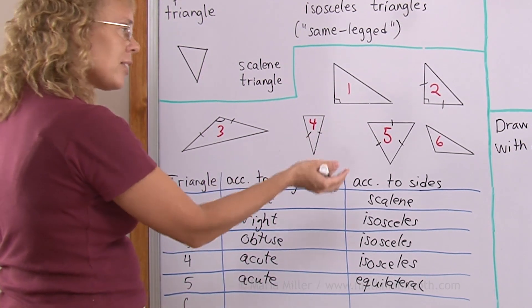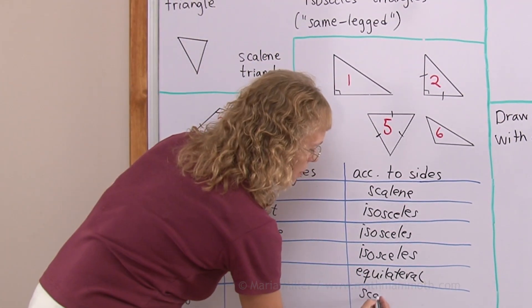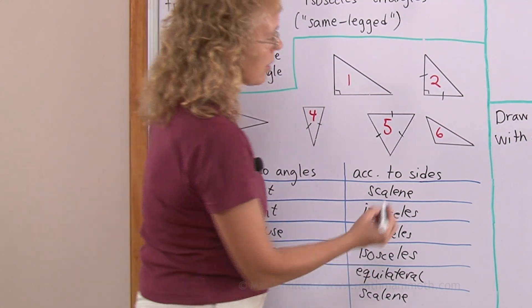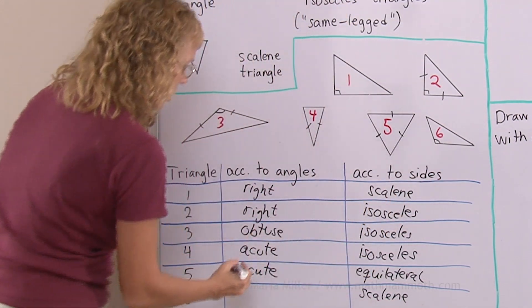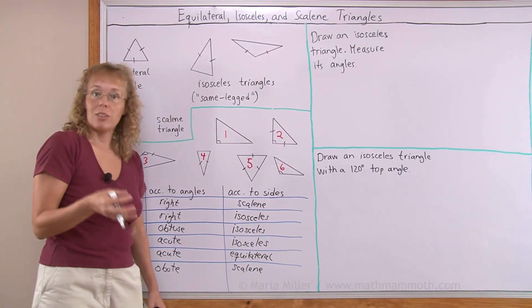Number six. Nothing special about its sides. So it is scalene. And angles, I see one obtuse angle. So it is obtuse. Scalene triangles can be obtuse or acute or right.